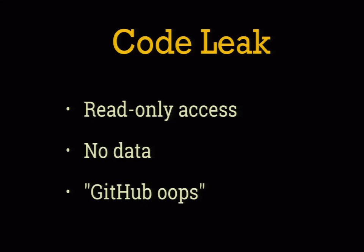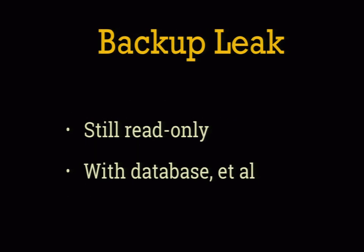The next threat is source code leaking. Taking aside the effects to the business, it shouldn't really be a big problem for security if your code leaks. The most common vector is incorrectly configured error pages that show stack traces. Most developers understand that hard-coding secrets into source code is security through obscurity — only a tiny bit better than no security at all. For our system to be resilient to a code leak, just make sure there are no secrets in the code.